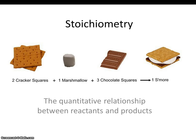Let's look at this cartoon to begin with. This tells us that two crackers plus one marshmallow plus three chocolates makes one s'more. So the coefficients are 2, 1, 3, and 1. So stoichiometry will be examining the coefficients and then establishing the ratio of moles.